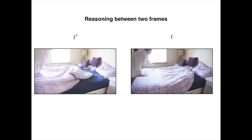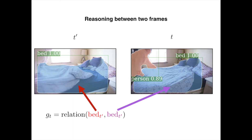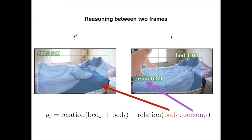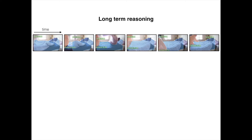The object head reasons with a new module called the Object Relation Network. This module takes two frames and their detected object instances — in this example, a bed and a person. ORN computes pairwise relationships over objects through a non-linear mapping and sums their outputs. The model is also able to take into account long-term relationships through a recurrent neural network over time.